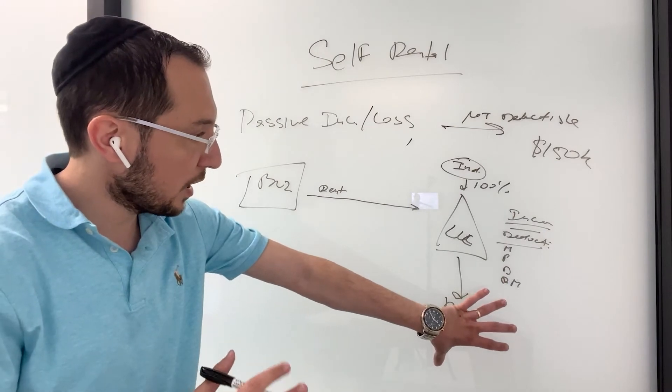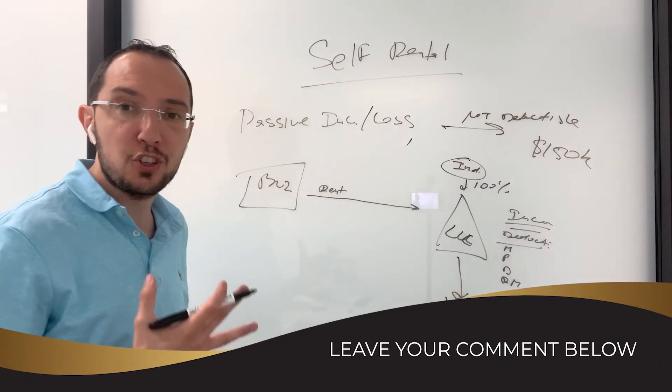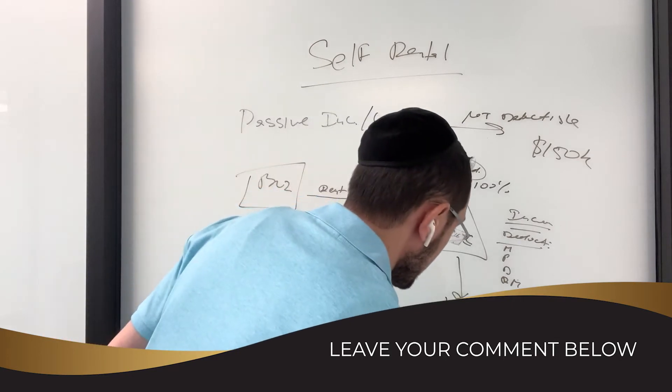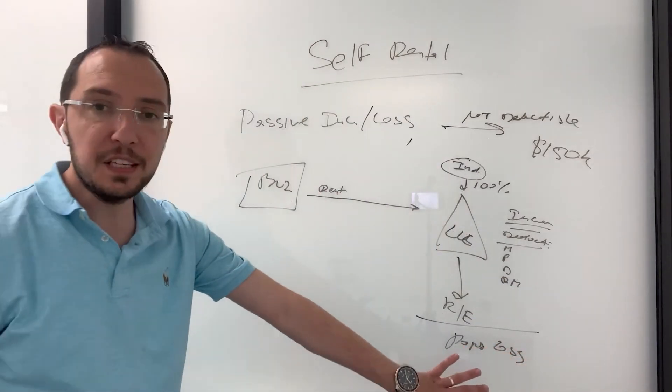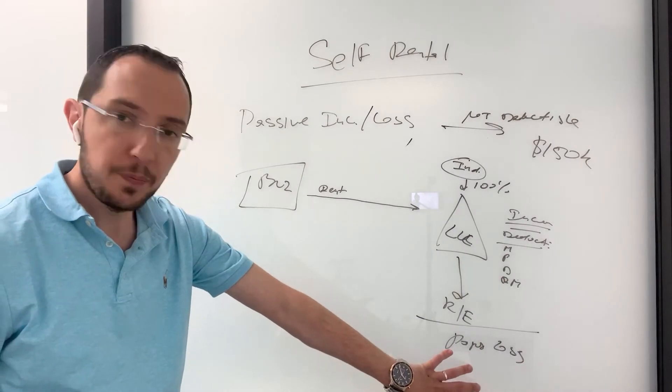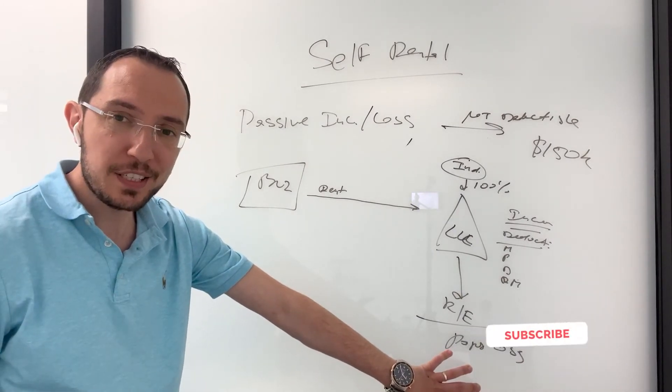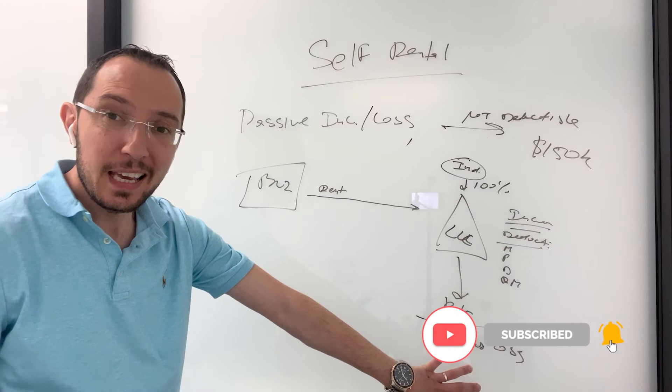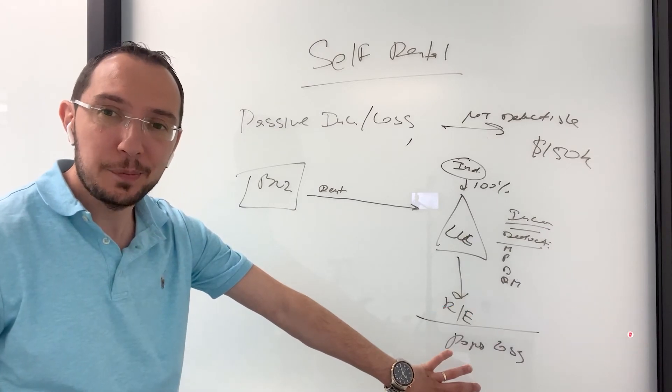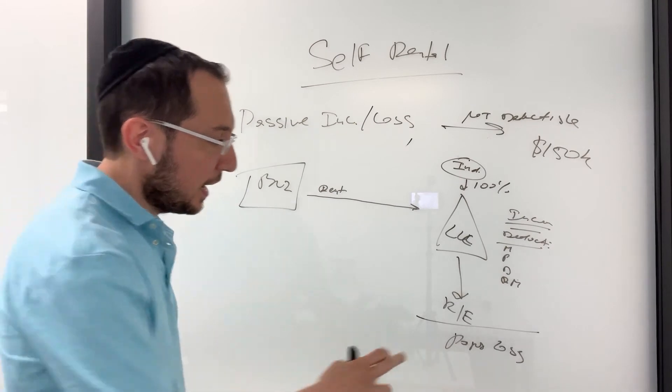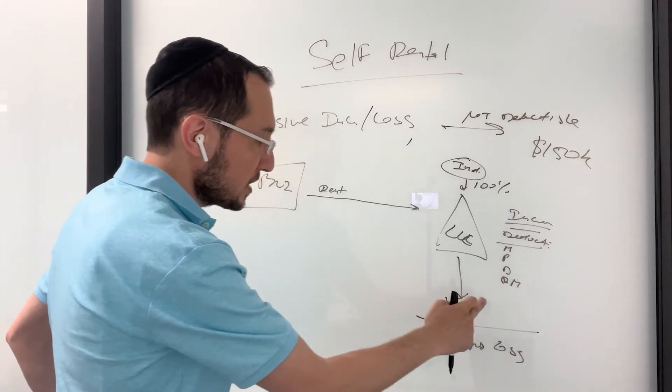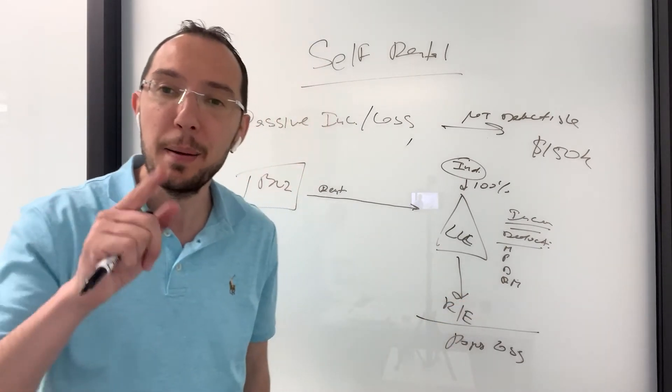Now, here's the thing. This real estate, most likely, just like any other real estate will produce a paper loss. This paper loss right here, guess what the IRS says? It is not deductible. Wait, wait for it. Wait for it. Don't worry. I'll show you how it's deductible. IRS says a self-rental loss is not deductible. It's considered passive.